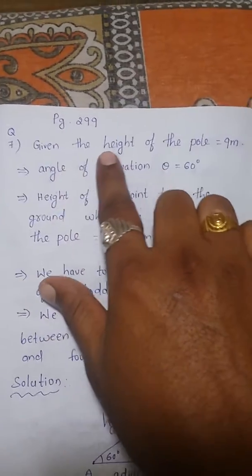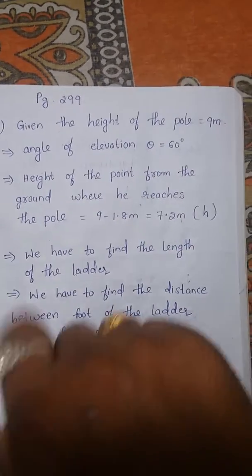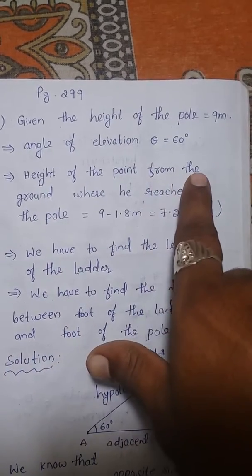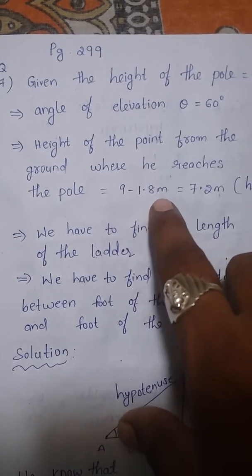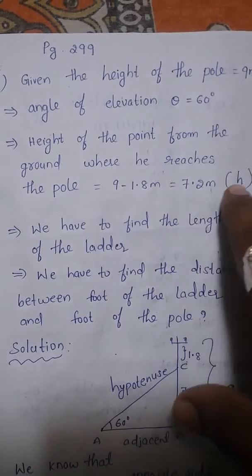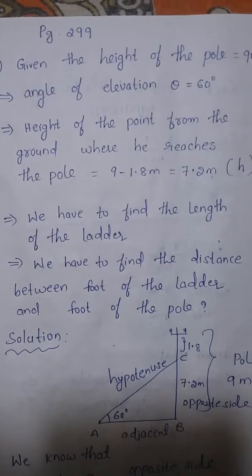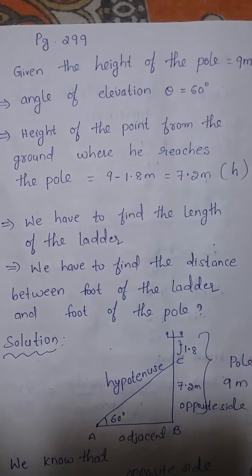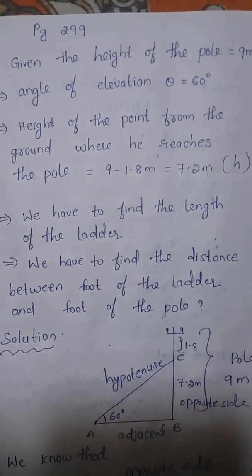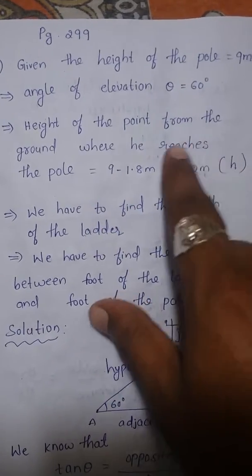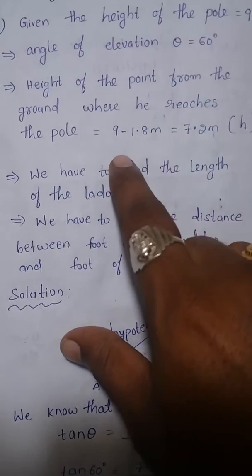It is given in the question: the height of the pole is 9 meters and the angle of elevation is 60 degrees. The height of the point from the ground where he reaches the pole is 9 minus 1.8 meters, that is 7.2 meters. He will do the repair at a height of 7.2 meters, so that is why we are subtracting 1.8 from 9.